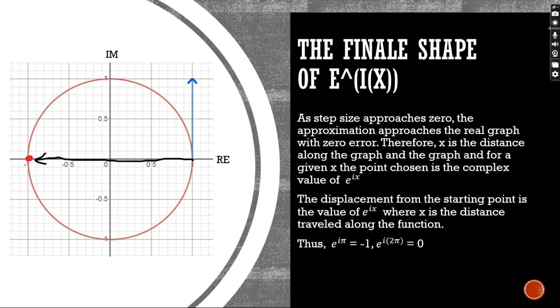Some points on this graph include e to the i pi, which equals negative 1, and e to the i 2 pi, which equals 0, as shown in the graph above.